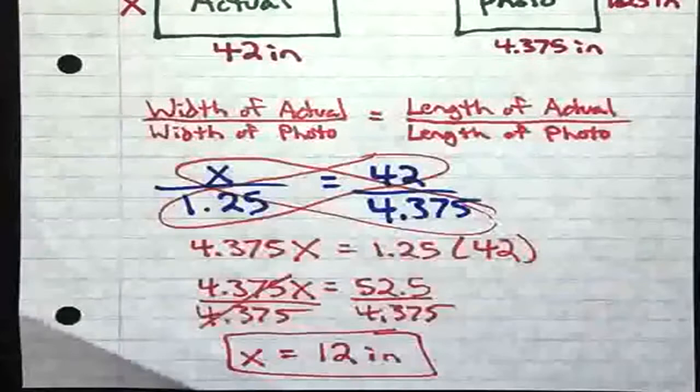Now I need to divide both sides by 4.375. And when I do that, these 4.375's over here cancel out, leaving me with X equals 52.5 divided by 4.375 which is 12 inches. And we have the width of our actual painting.